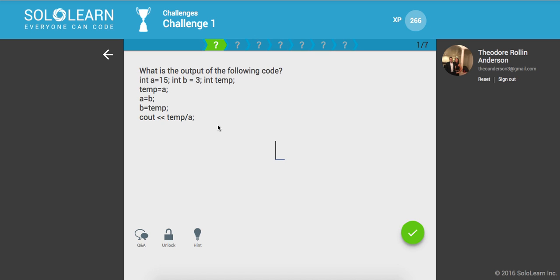What is the output of the following code? Here we have integer a of 15, b of 3, and a temp. We set temp to be 15. We set a to be equal to 3. b is equal to temp. And then finally, we want temp divided by a. So we're going to do temp, which is 15, divided by what is a now? a is 3, so this answer should be 5.